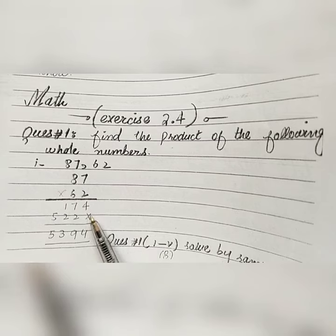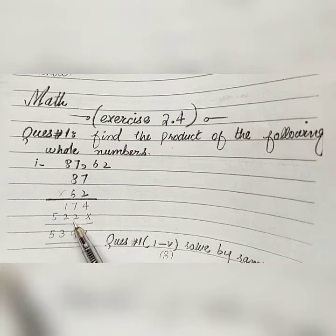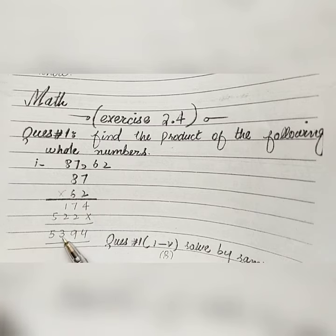Down below the first number, we will give the cross sign. Then we will multiply six times seven, and then we will multiply six times eight and here we will write. Next we will write 4. Then we will add 4 as it is. Then 7 plus 2 will be 9. 2 plus 1 will be 3. Then 5 will come as it is.